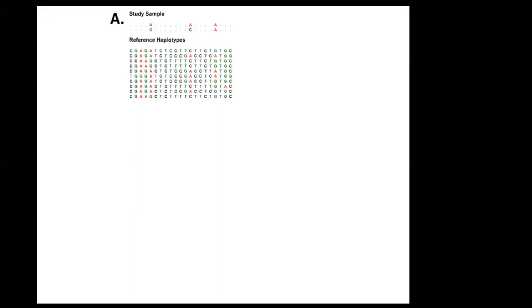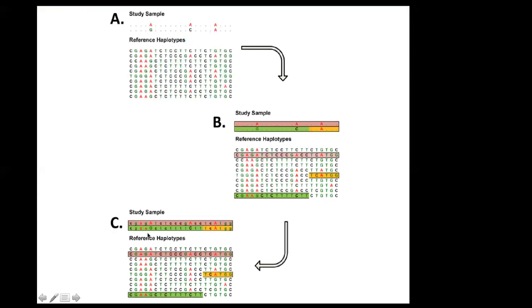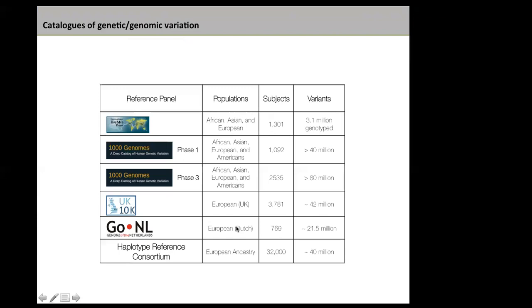For those not familiar with genotype imputation, here's a brief conceptual summary. The idea is that you have a genotype array covering some variants — for example, three variants in a region — but a reference of haplotypes such as 1000 Genomes covers all possible variants in that region. You phase your haplotypes and align them with the reference haplotypes, then fill in the gaps at positions that were not actually genotyped but can be statistically inferred.